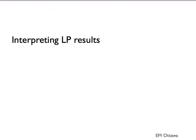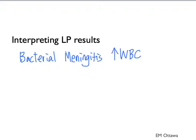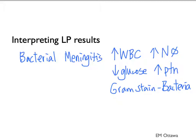Once the CSF is obtained, this is how we can interpret the results. In bacterial meningitis, we will see a high white blood cell count with high percentages of neutrophils, low glucose, and high protein. The gram stain and culture might show the bacteria. However, that percentage gets a bit lower since we have pre-treated the patient with antibiotics. We still prefer this because patients do better with early antibiotics.